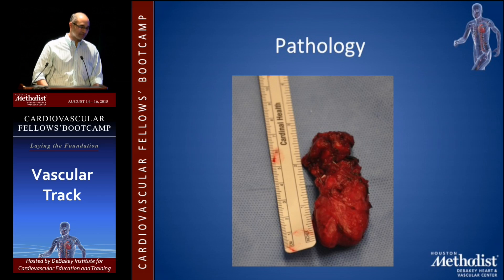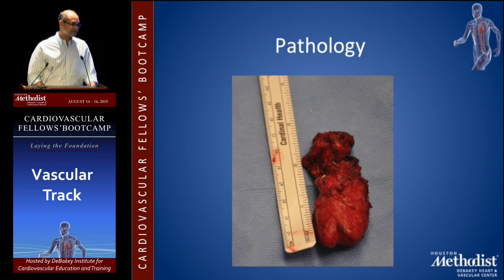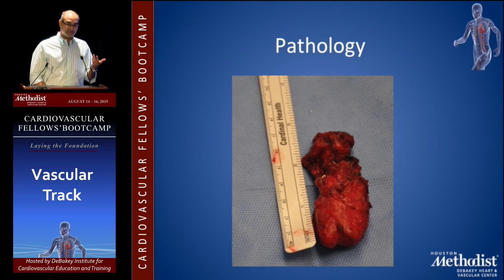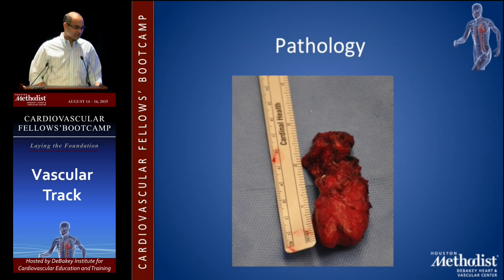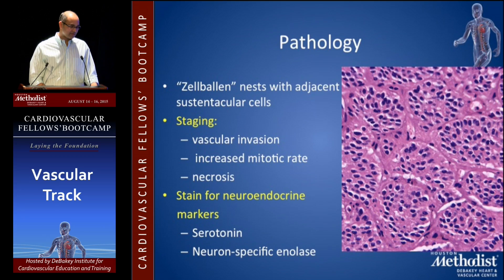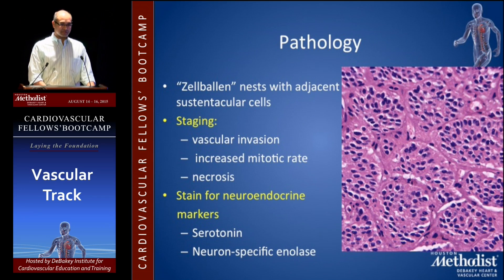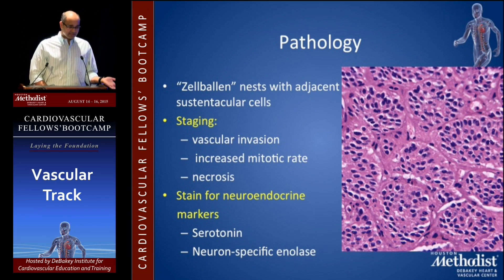Pathology: it's usually a firm to soft, fleshy tumor seen at the carotid bifurcation. Sizes can vary — we actually had a patient with bilateral 6-centimeter carotid body tumors. The histology is called Zellballen, which in German means 'a ball of cells' — cell nests with adjacent sustentacular or support cells.